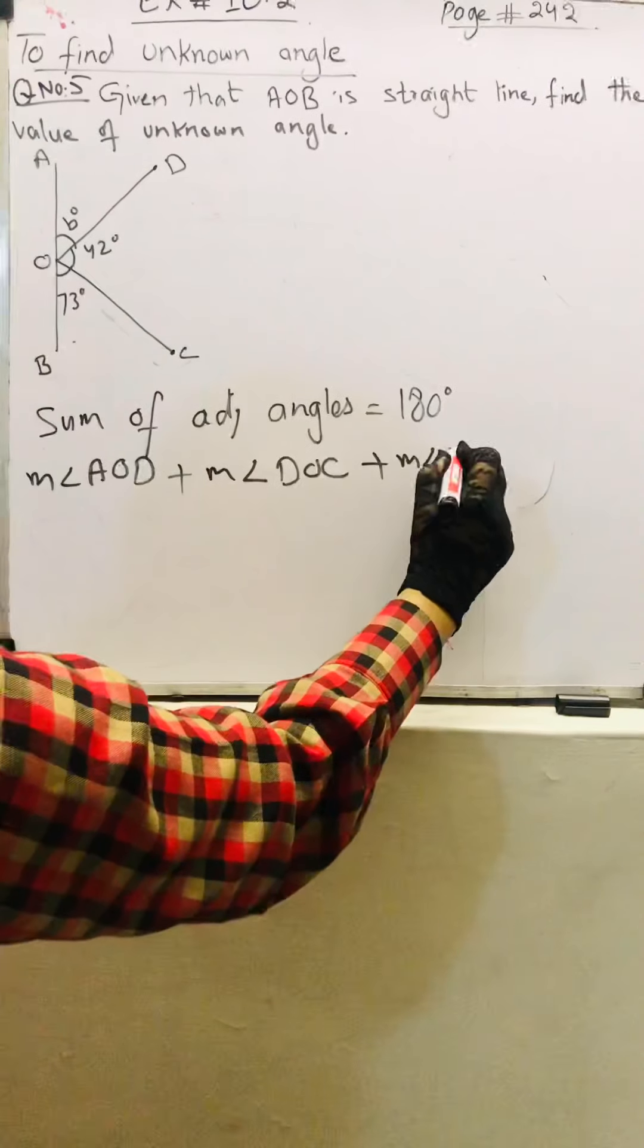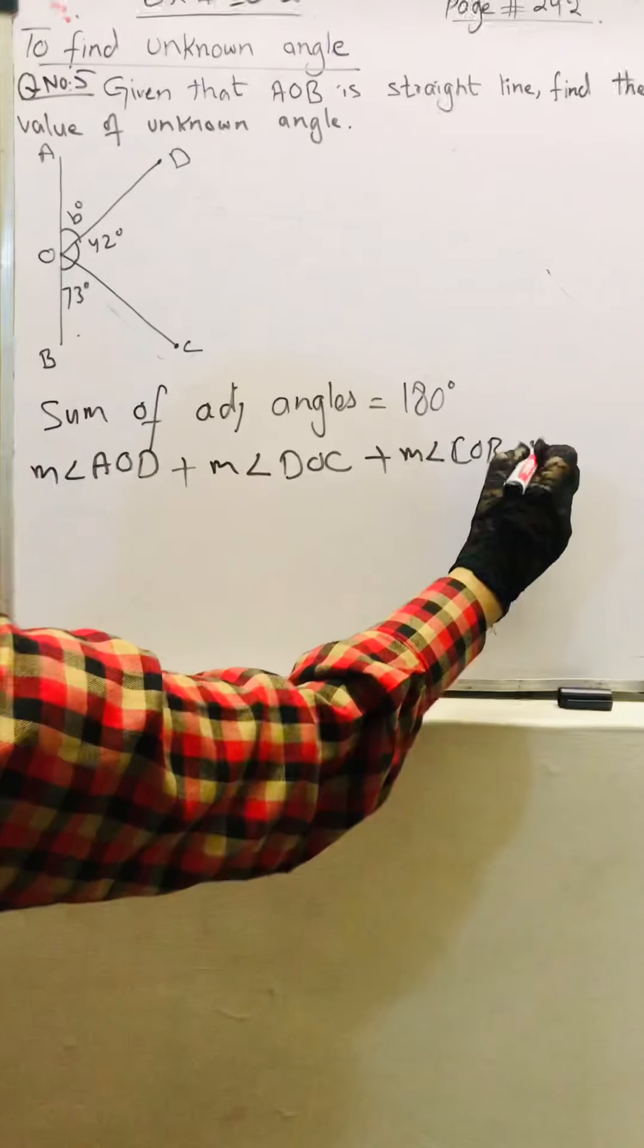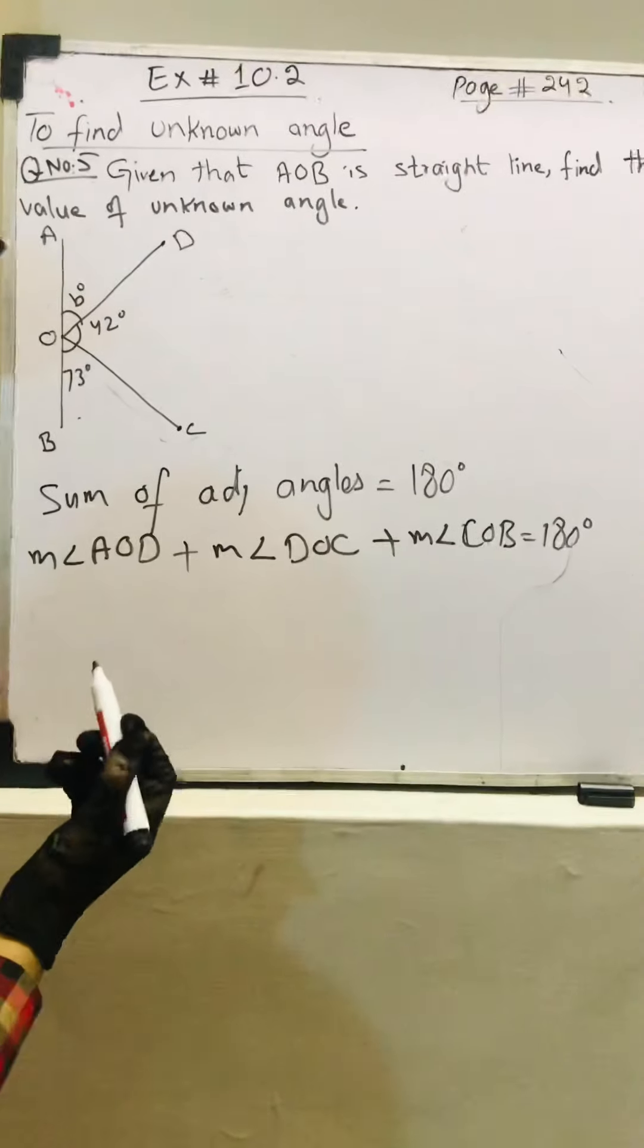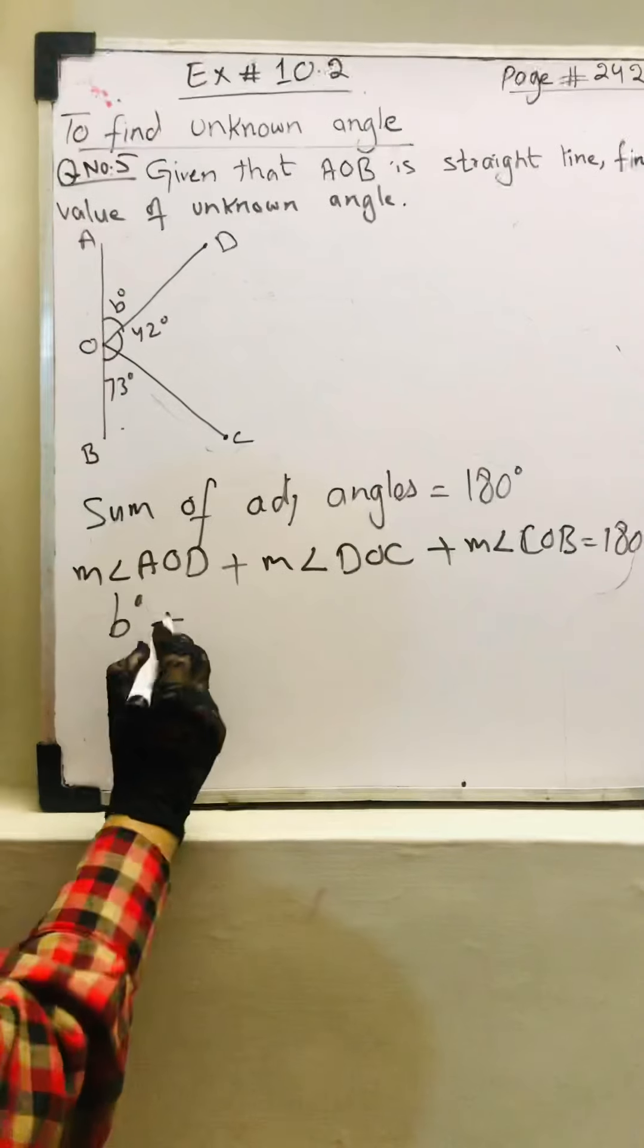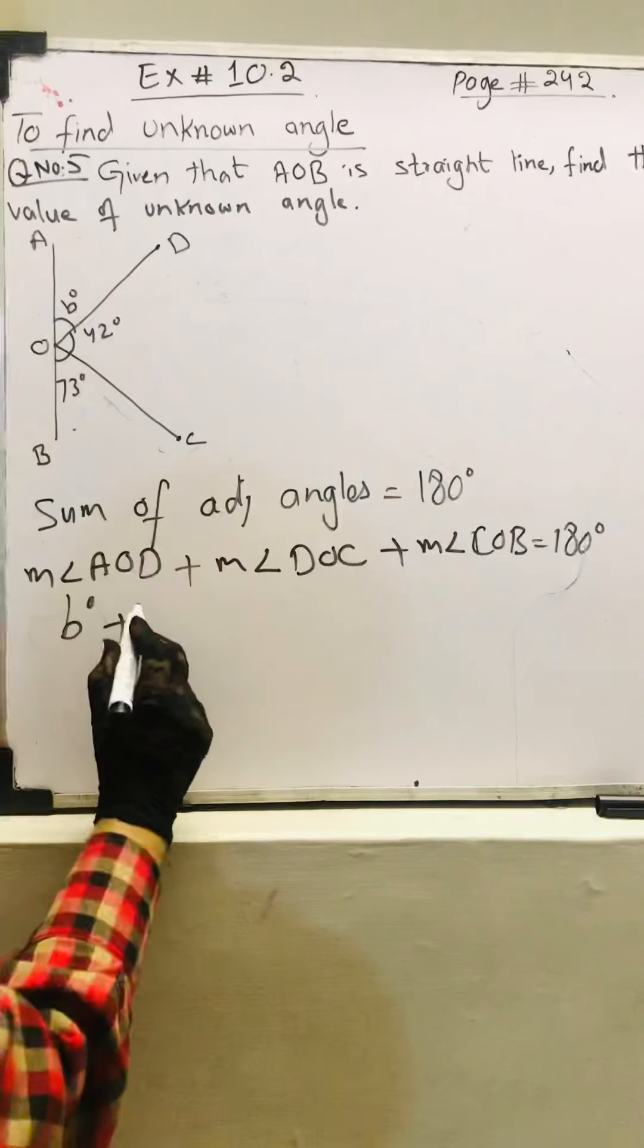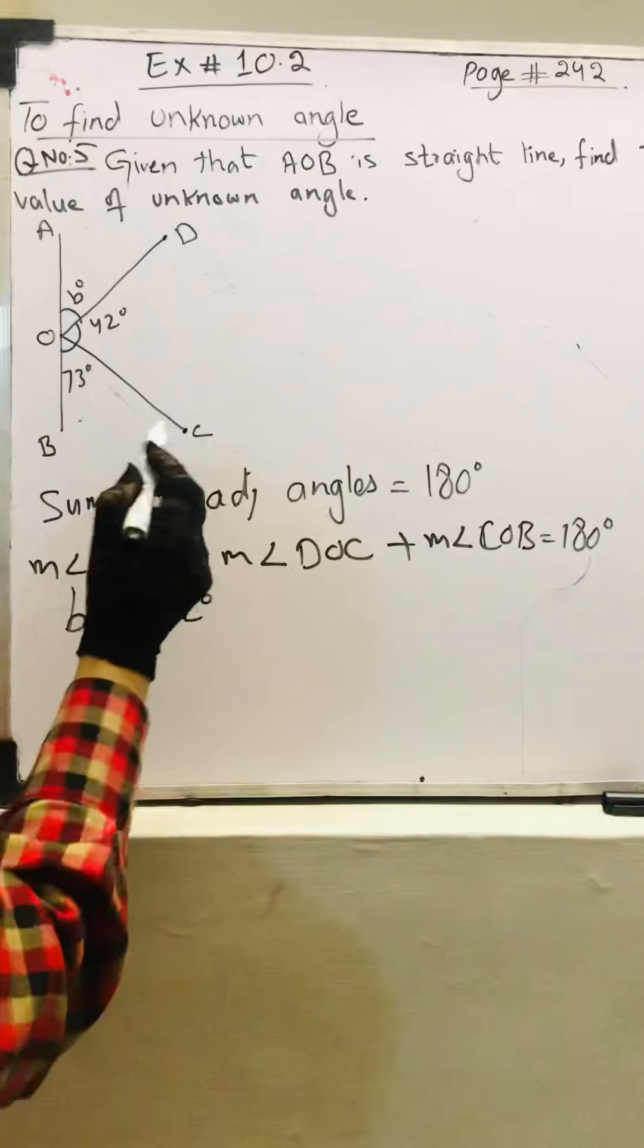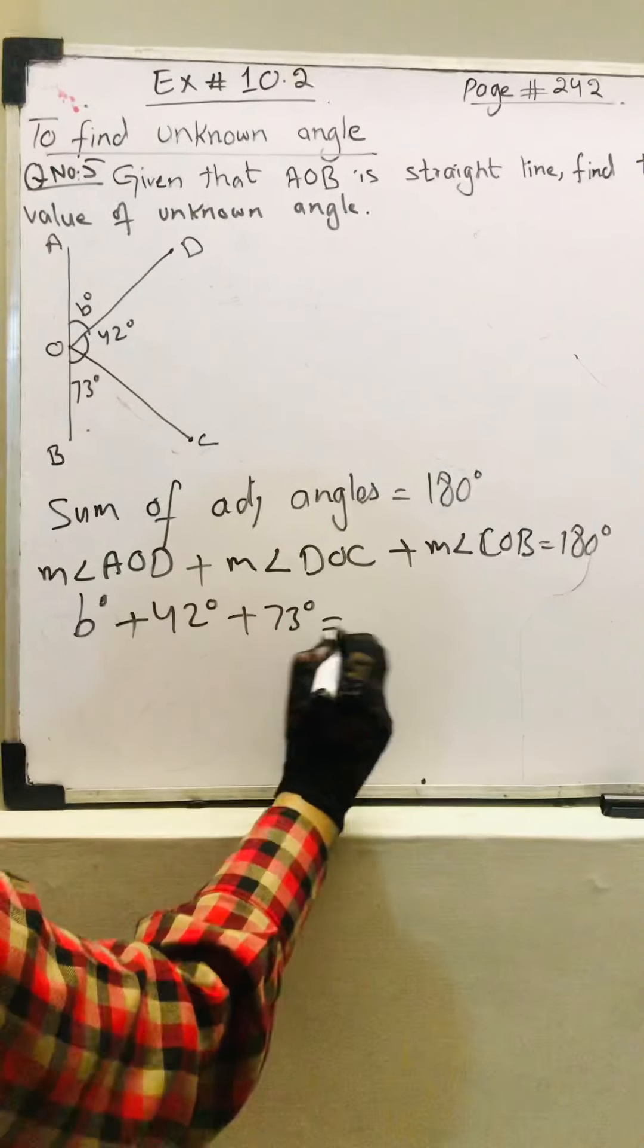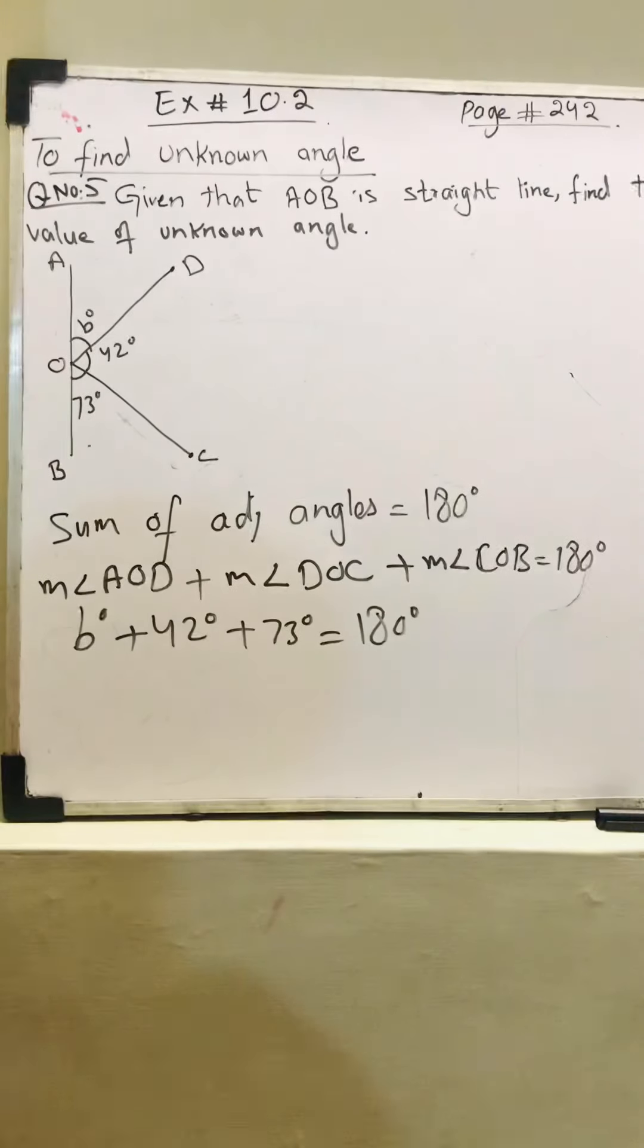Let's put the values. Angle AOD is equal to b degrees. Plus angle DOC is equal to 42 degrees. Plus angle COB is equal to 73 degrees. All of these are equal to 180 degrees.